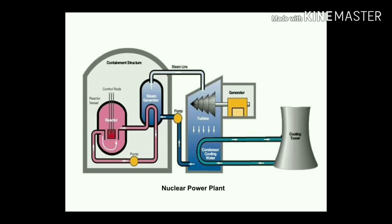Here we discuss nuclear power plants. Nuclear energy is used to develop heat energy, and that heat energy is used to develop high-pressurized steam. That steam is transferred to water turbines or turbine blades, which rotate. The rotating blade is connected with a shaft, and the shaft is connected with a generator, so electricity is generated with the application of nuclear energy.